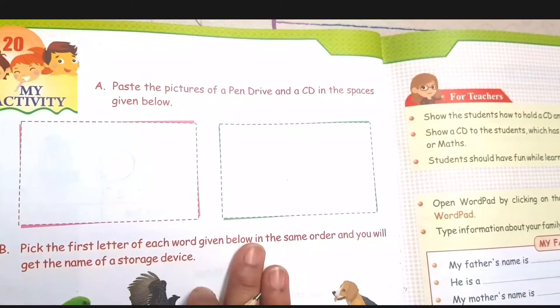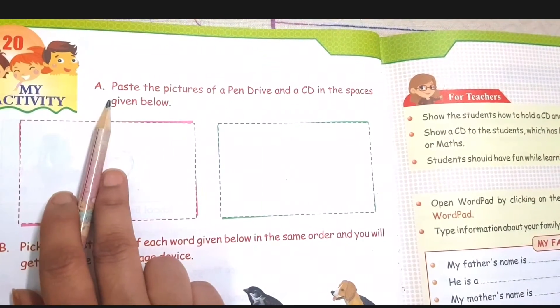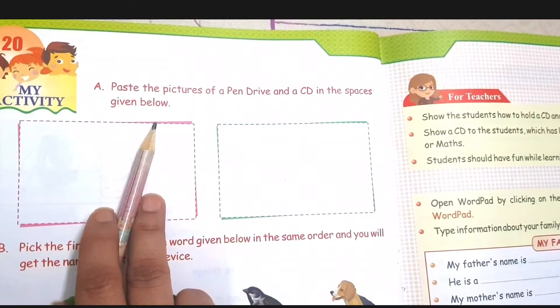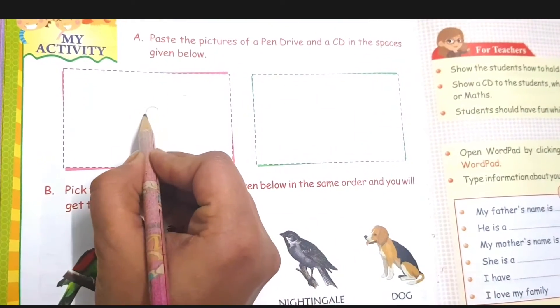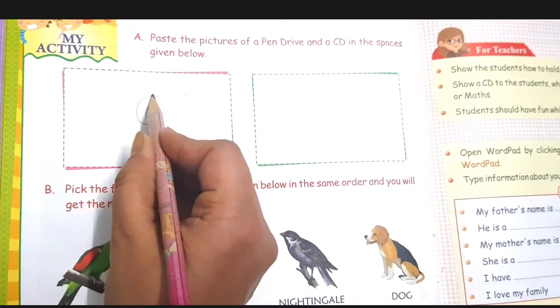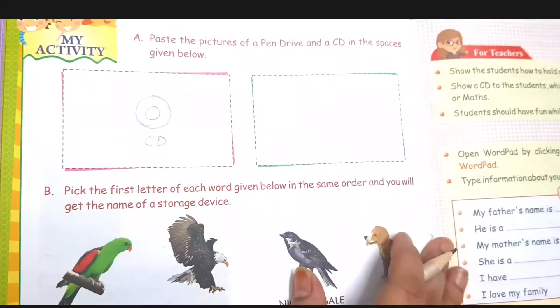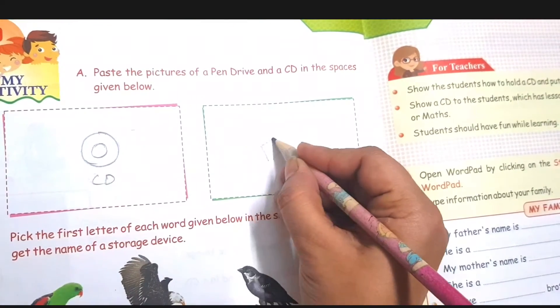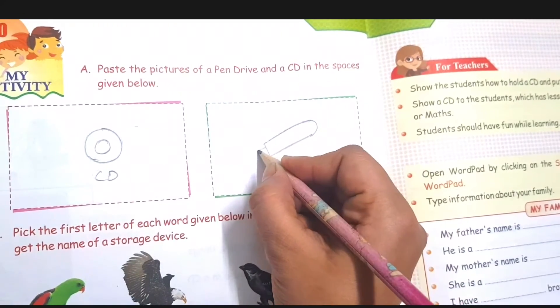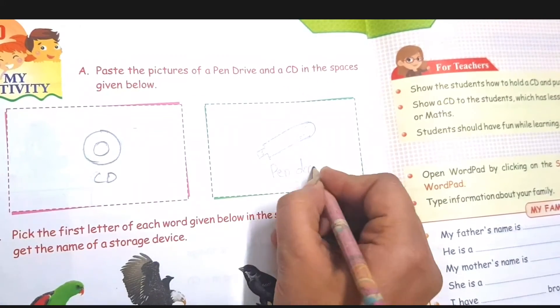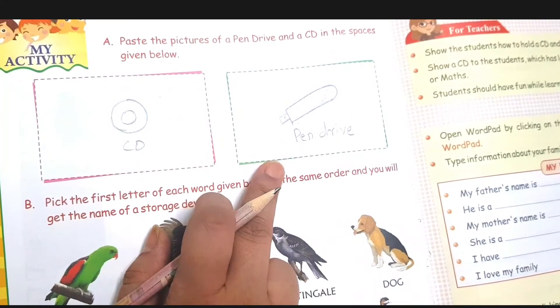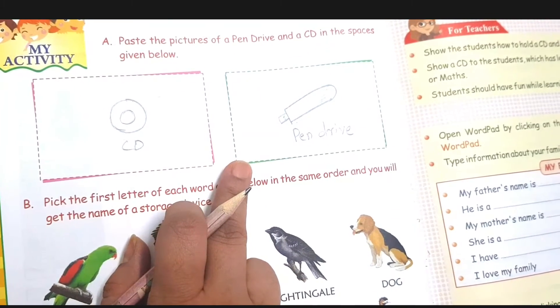Coming to the next page, children. He is asking to paste the picture of a pen drive and a CD in the spaces given below. Instead of pasting, you can draw a CD and pen drive. It is very simple — just draw the CD here and draw the pen drive like this. These are the devices we use as storage in the computer.